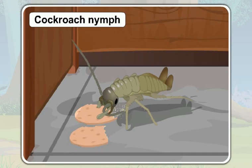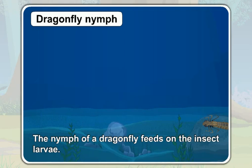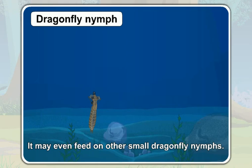You all know that a cockroach nymph feeds on decaying and old matter. Unlike a nymph of a cockroach, the nymph of a dragonfly feeds on insect larvae. It also feeds on small annelids and mollusks. It may even feed on other small dragonfly nymphs.